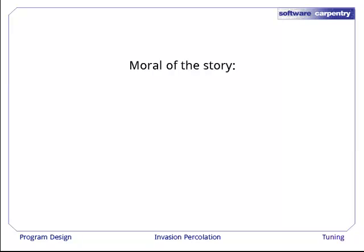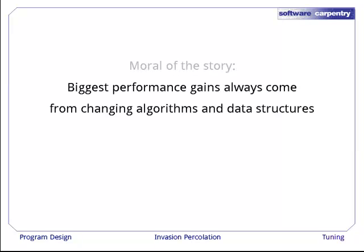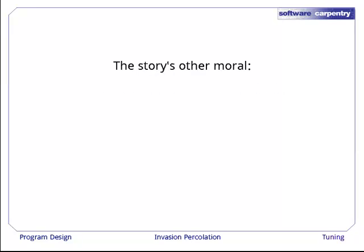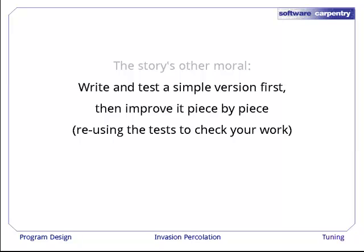The moral of the story? The biggest performance gains always come from changing algorithms and data structures, not from tweaking loops or rearranging conditionals. The other moral to this story is that if you want to write a program that's fast, you start by writing a program that's simple. You then test it and improve it piece by piece, reusing the tests to check your work at each stage.